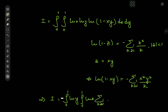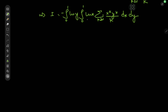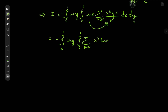We have the sum over k of x^k times y^k divided by k, integrating first with respect to x and then with respect to y. Notice that the log x term is independent of the index variable k, so we can take it inside the summation operator and get the negative of the integral from 0 to 1 of log y times the integral from 0 to 1 of the sum over k of x^k times log x divided by k times y^k dx dy.